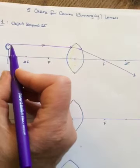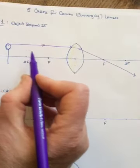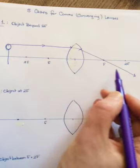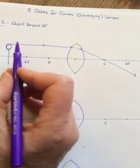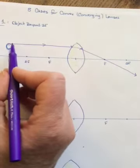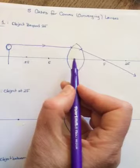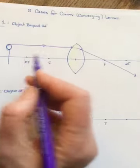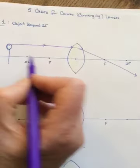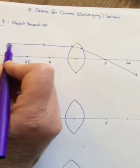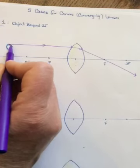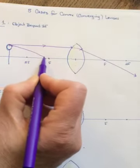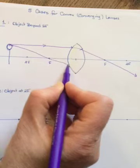A second ray is a ray that goes in through f and gets refracted so it comes out parallel. The third ray is a ray that goes in through the optical center and comes out straight through. I'll go in through f just because it's a shorter line to draw.